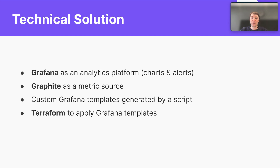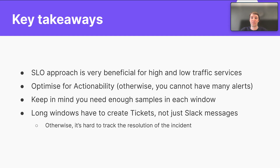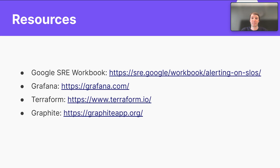Our technical solution uses Grafana for charts and alerts, with Grafana as the metric source and custom Grafana templates generated by a script applied via Terraform. Takeaways: the SLO approach is very beneficial and works great for both high and low traffic services. It's very important to optimize for actionability, otherwise you will be overwhelmed by alerts. You need to ensure enough samples in each window. Finally, the long window must create tickets, not just Slack messages — otherwise it's hard to track the resolution of an incident. Thank you for listening.